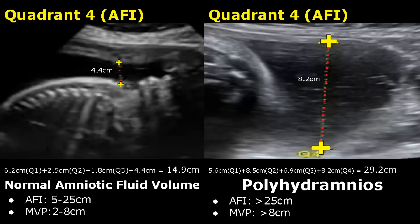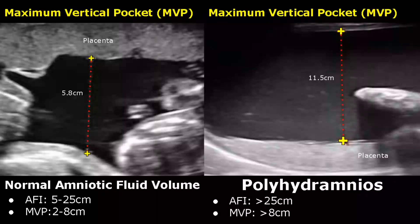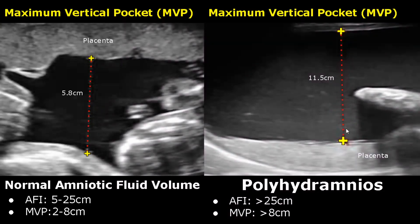Using the Maximum Vertical Pocket method, this fluid pocket measures 11.5 cm, confirming Polyhydramnios because it is more than 8 cm.